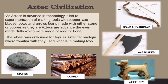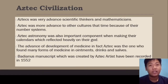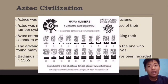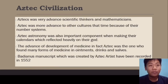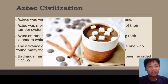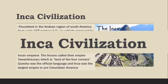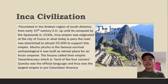The Aztecs were very advanced scientific thinkers and mathematicians. They were more advanced than other cultures of the time because of their number systems. Aztec astronomy was also an important component in making their calendars, which reflected heavily on their gods. The Aztecs made many advances in medicine, discovering forms of medicines in ointments, drinks, and salts. The Badianus Manuscript, created by Aztec artists, was recorded in 1552.